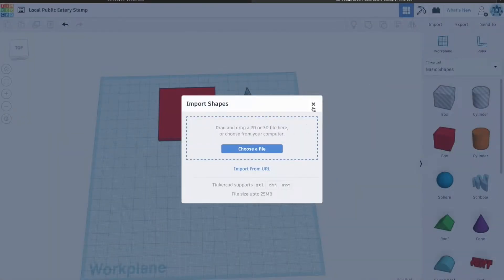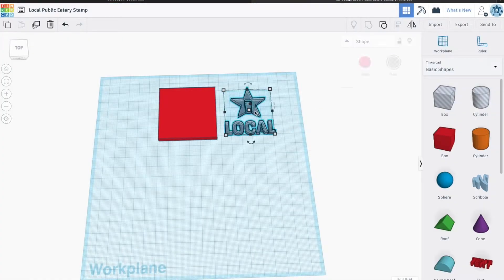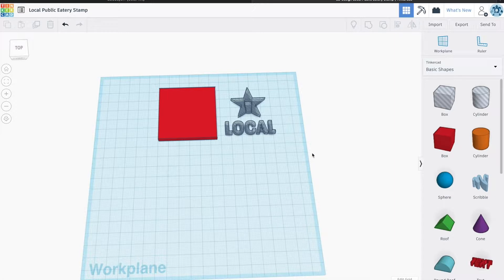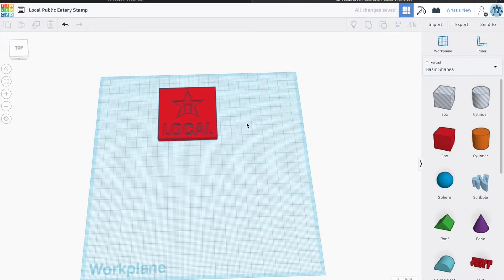I used Tinkercad.com to model the template for the stamp and uploaded an SVG version of the logo, which made it very simple to use the pull and drag tools to size it properly. I used the logo as a hole instead of a solid shape and then grouped it with a solid rectangle to give me a stamp template.